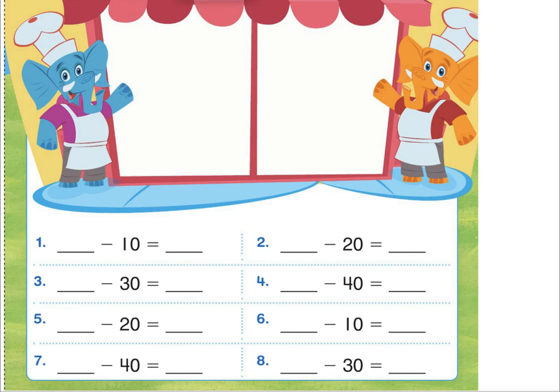Good afternoon, everyone. It's Mr. Montgomery, and today we're doing more subtraction with two-digit numbers and a bunch of tens. So we're just kind of doing the opposite of what we did in the last unit. Instead of putting them together, we're just kind of taking them apart. Easy enough, right?